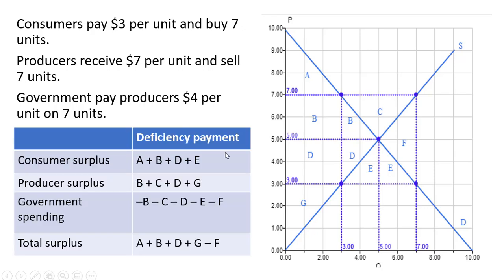So consumer surplus is going to be the difference between the height of the demand curve and the price that consumers pay for these units, which is $3, up to the 7th unit. So we have this giant triangle here represented by letters A, B, D, and E. So that's consumer surplus. Producer surplus is going to be based on the fact that producers are receiving $7 when all is said and done. And they're selling 7 units, so the difference between the price of $7 and the supply curve all the way up to that last unit. So we have this big triangle here being represented by letters B, C, D, and G. That is producer surplus.